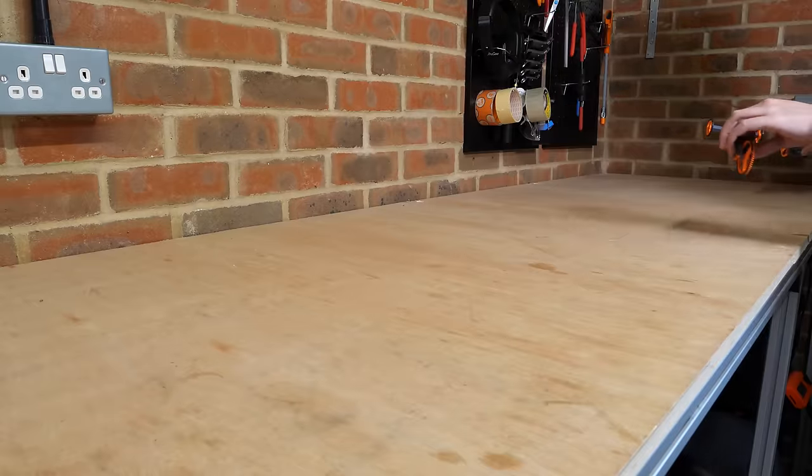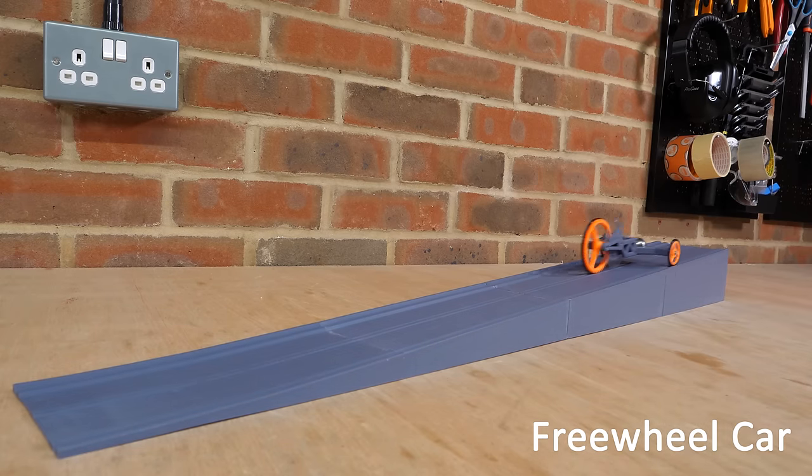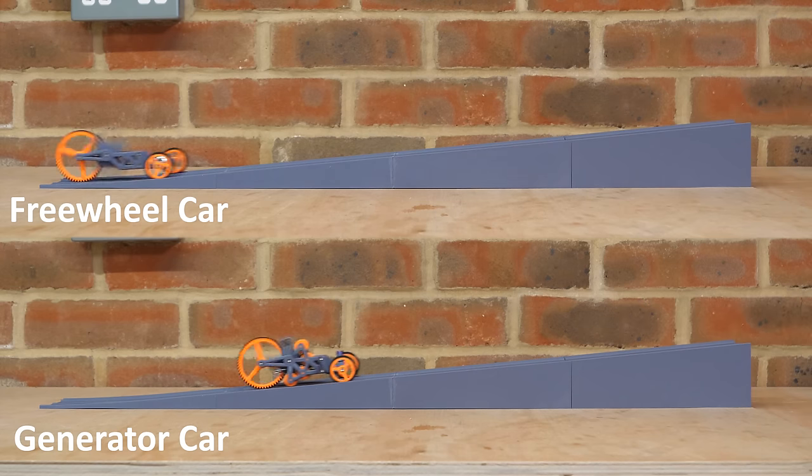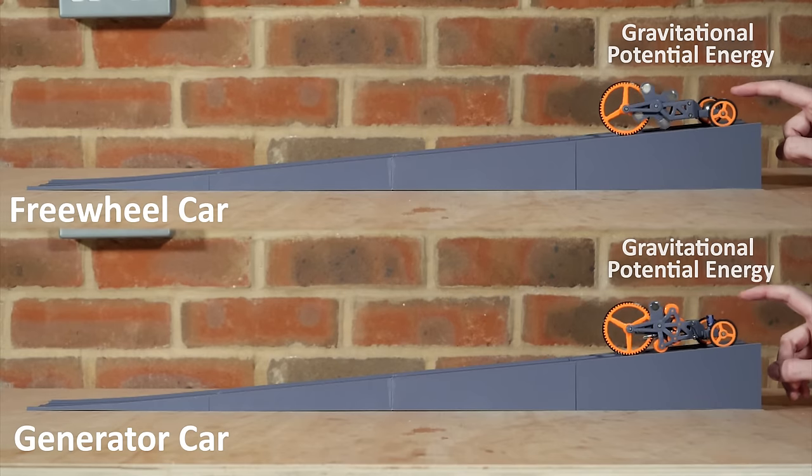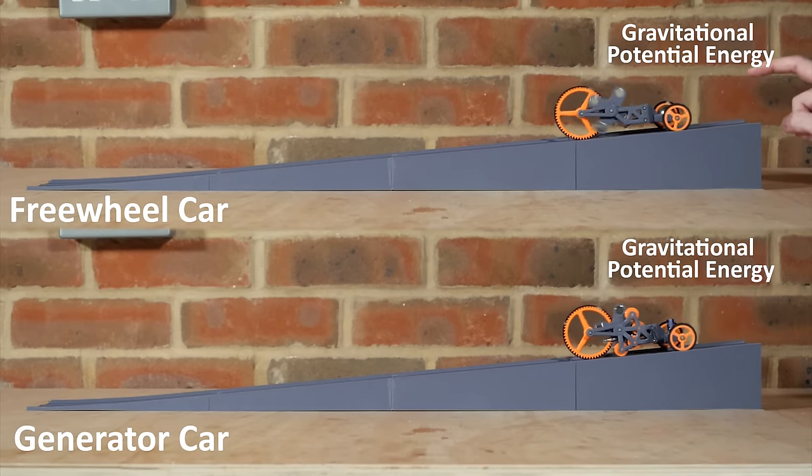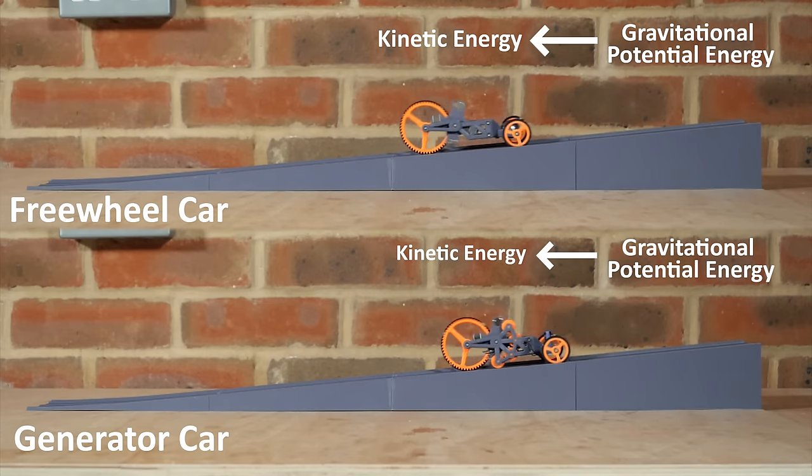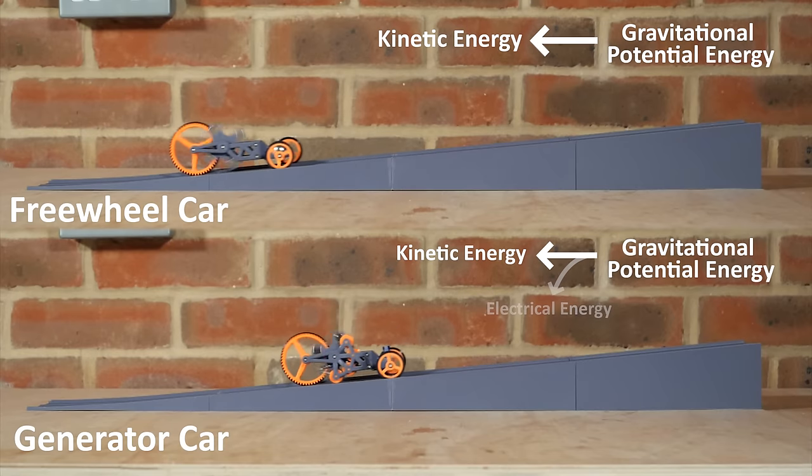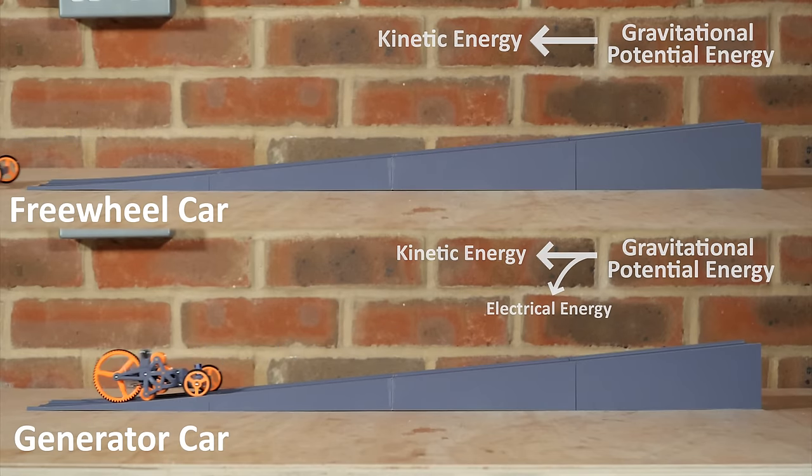So the generator car must be capturing energy from somewhere that isn't obvious from this test. But what happens if we send both cars down a ramp? This gives both cars identical amounts of starting potential energy and it's clear the car with the motor travels down the slope far slower. So just before release both cars have the same gravitational potential energy. But as they travel down the slope, the three-wheeling car converts more of its potential energy into kinetic energy. Whereas the car with the generator converts a portion of this energy into electrical energy and stores it in the capacitor.